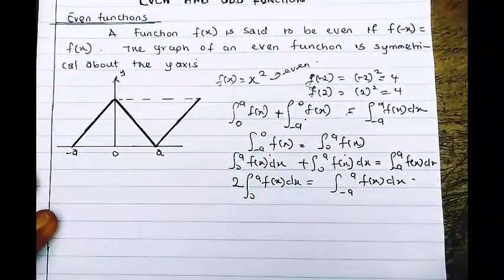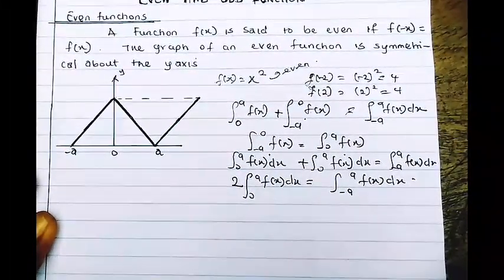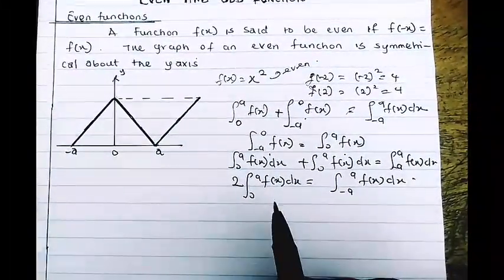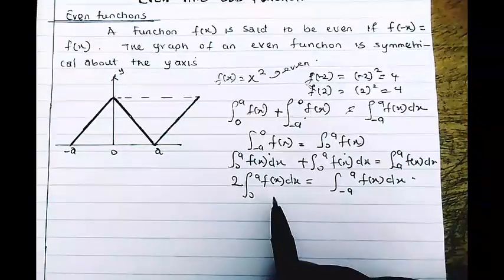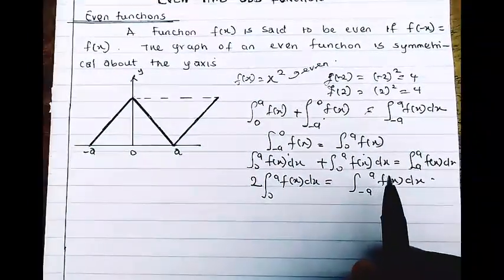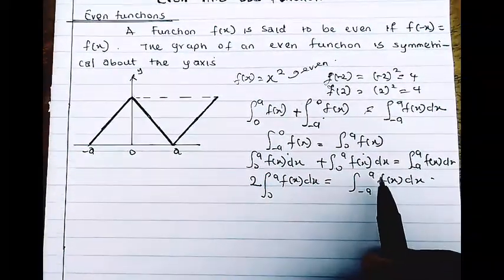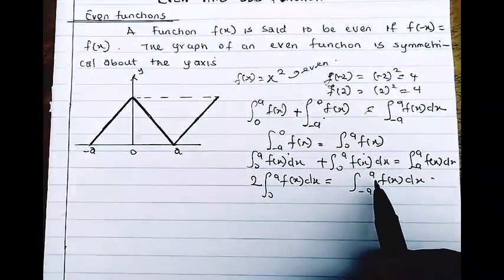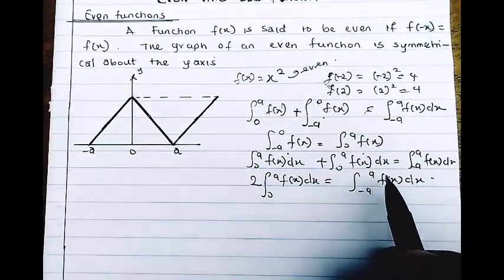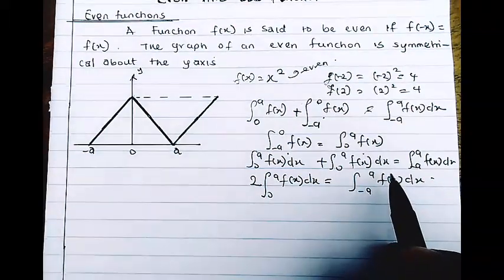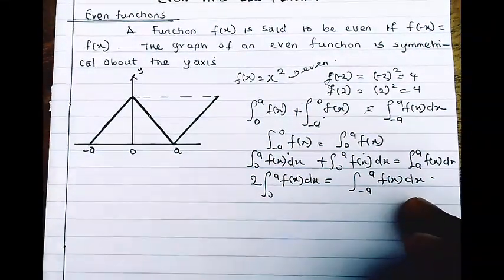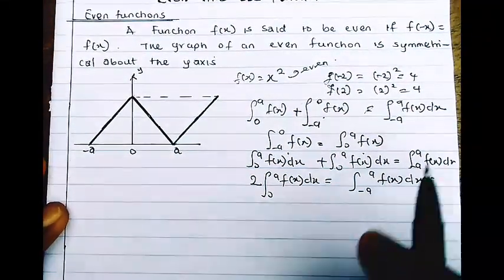This is the most important property of an even function: 2∫₀ᵃ f(x) dx = ∫₋ₐᵃ f(x) dx.